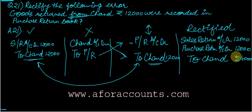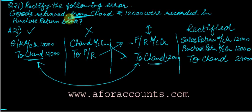This is how the rectification entry is passed. Always pay attention to small words like 'from' — they are very important. From the word 'from,' we know this is not purchase return, because any person will return goods to me only when I have made sales to him. So it has to be sales return, not purchase return. These small things while reading the questions are very important and prevent errors.